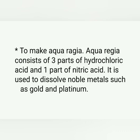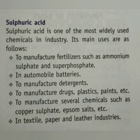Uses of sulphuric acid are to manufacture fertilizers such as ammonium sulphate and superphosphate, in automobile batteries, to manufacture detergents, drugs, plastics, paints, to manufacture several chemicals such as copper sulphate, epsom salt, and in textile, paper, and leather industries.